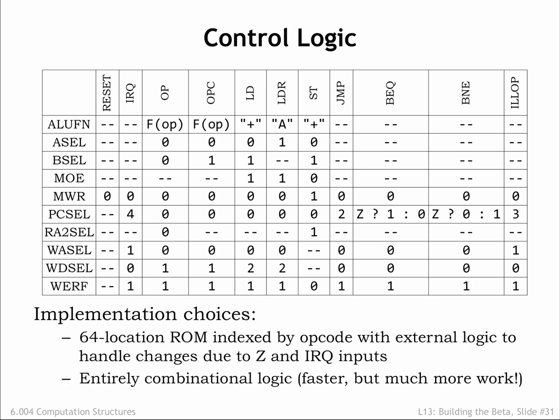As mentioned previously, a read-only memory indexed by the 6-bit opcode field is the easiest way to generate the appropriate control signals for the current instruction. The Z and IRQ inputs to the control logic will affect the control signals, and this can be accomplished with a small amount of logic to process the ROM outputs.